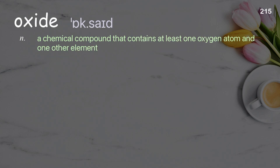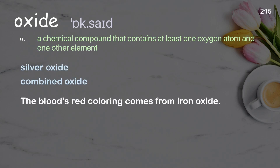Oxide: a chemical compound that contains at least one oxygen atom and one other element. Examples: the blood's red colouring comes from iron oxide.